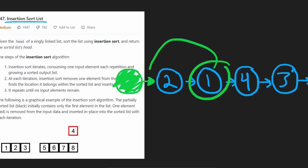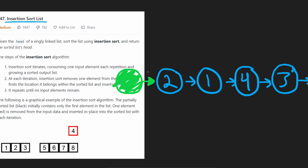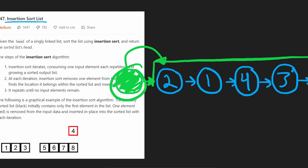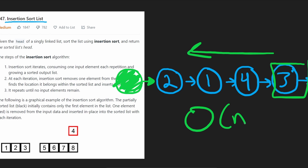With the dummy node, inserting at the front is the same as inserting between two nodes. The head of our linked list won't change — it'll always be the dummy node. When returning the result, we just take the dummy node's next pointer and return that portion. This removes the edge cases. Also, when we were talking about insertion sort on arrays, we'd look to the left of each value, but with singly linked lists we can't go backwards — we always have to start at the beginning each time.